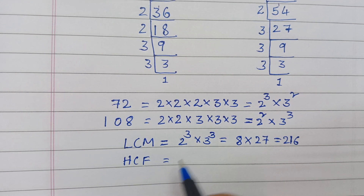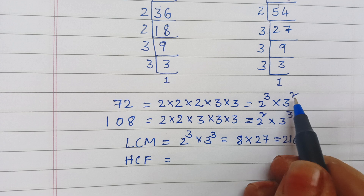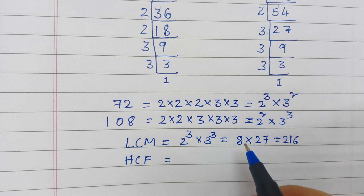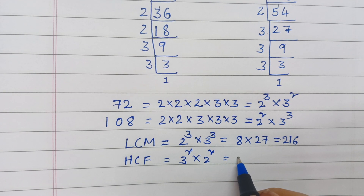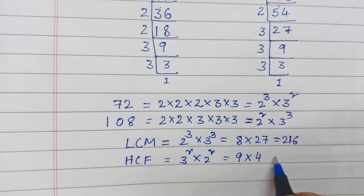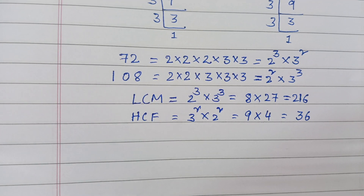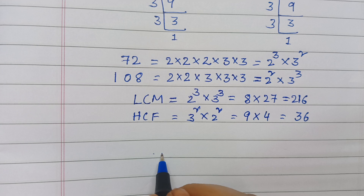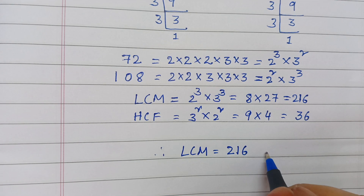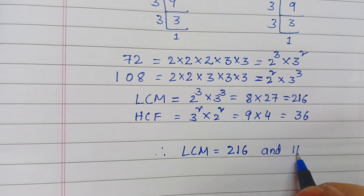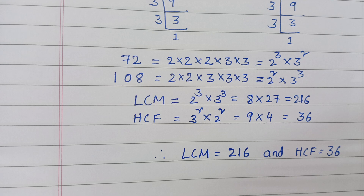HCF means the lowest powers are considered. Here 2 power 2 is the lowest power of 2, and 3 power 2 is the lowest power of 3. So HCF = 3 power 2 × 2 power 2 = 9 × 4 = 36. Therefore LCM is 216 and HCF is 36. This is the answer for the given problem.